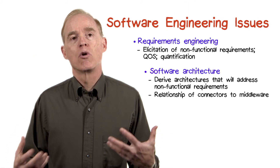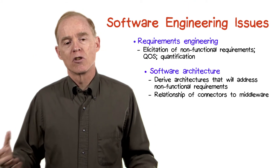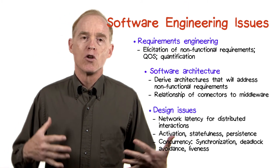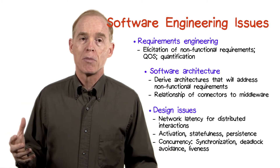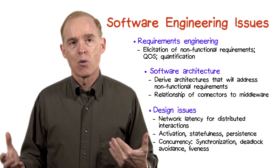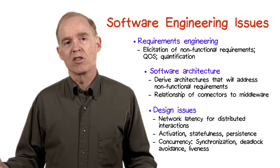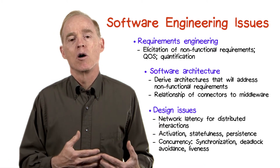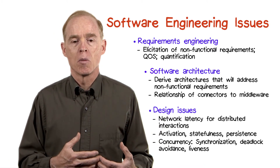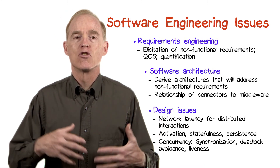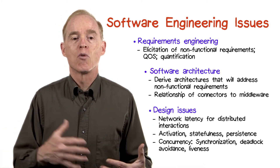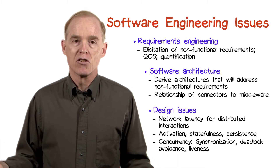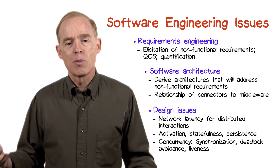The third software engineering issue has to do with some design questions. Whenever you have a distributed application, you have a network. Whenever you have a network, you have latency, that is delays in message passing. How is your system going to deal, at the software level, with this latency? Are there timeouts?